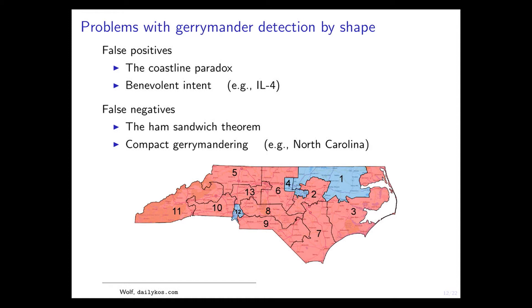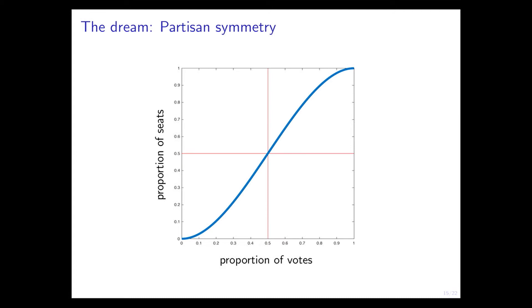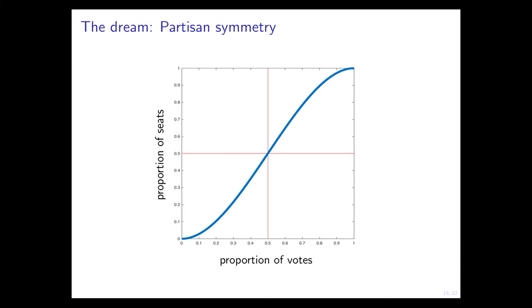So we want to move beyond shape. That's the second part: votes versus seats. This is the votes-to-seats curve. What we'd love is 50% of the vote turning into 50% of the seats.